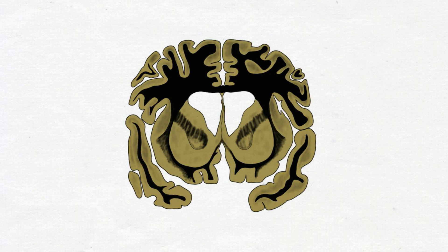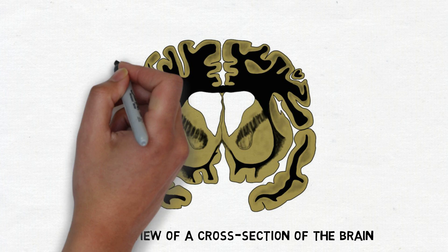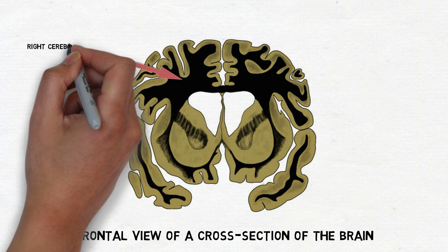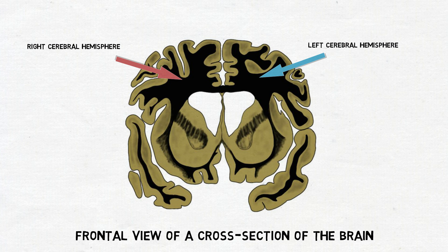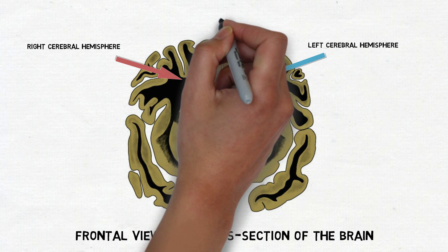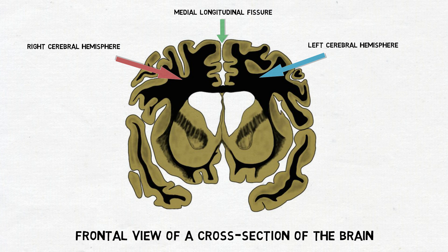To understand the role of the corpus callosum, it is first important to remember that the brain is divided into two cerebral hemispheres, right and left, separated from one another by a long groove called the medial longitudinal fissure. These two hemispheres are nearly mirror images of one another, but they do not function independently, and communication between the cerebral hemispheres is important for healthy brain function.